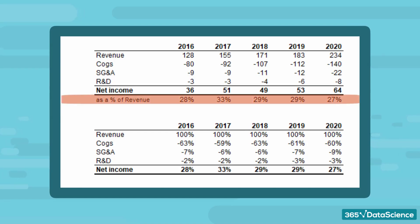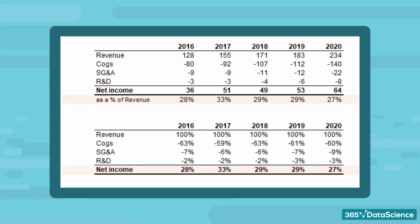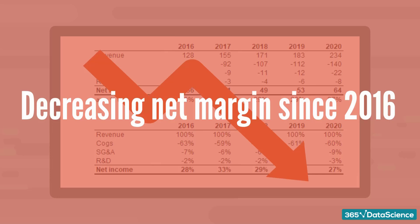Although we see steady revenue growth, the cost base fluctuates as a percentage year on year, resulting in a lower net margin. In the second year of the period under analysis, the net margin percentage increased to 33%, but then it dropped to 27%. We can say that the trend is a decreasing net margin since 2016.